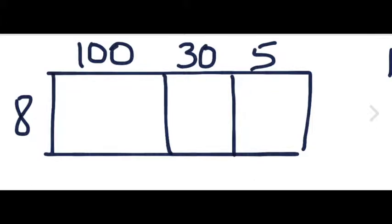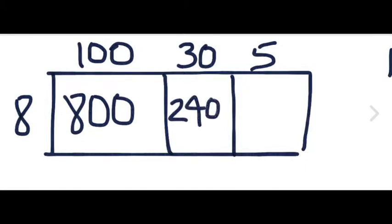To have a visual understanding, we will include the product of each multiplication to its corresponding box: 800, 240, and 40.